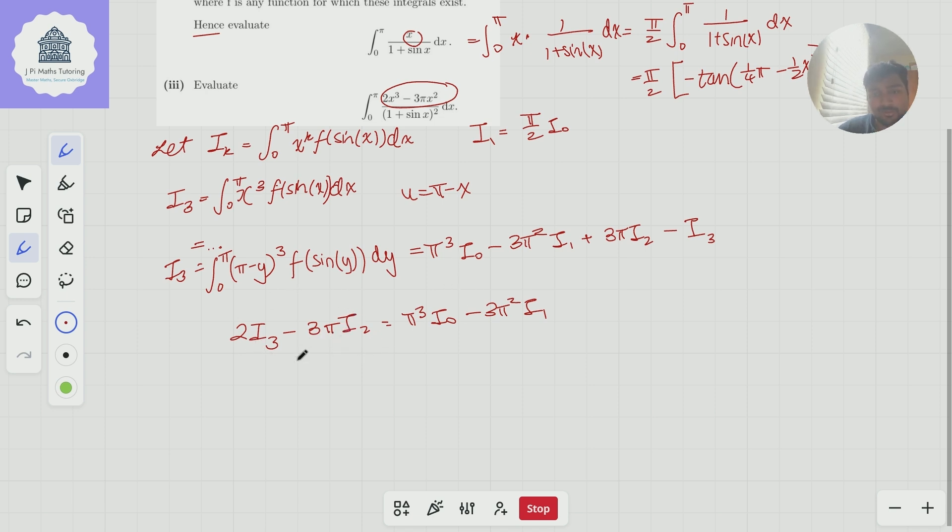And so therefore, according to what we've proved, this integral, let me just call it J, I can say that therefore J is equal to the integral from 0 to π of π cubed times i₀, so that would be π cubed times 1 over sine of x squared dx, and then minus 3π squared times i₁, so the integral from 0 to π of x over 1 plus sine x squared dx.